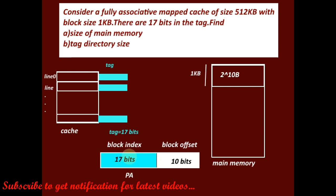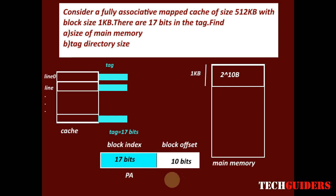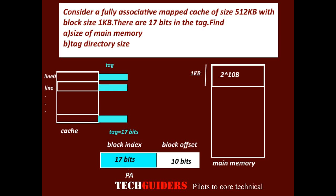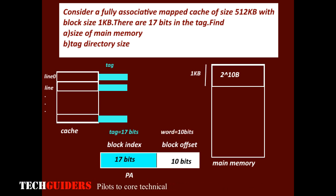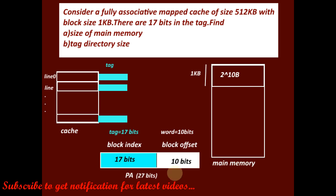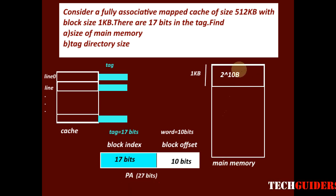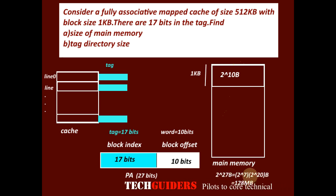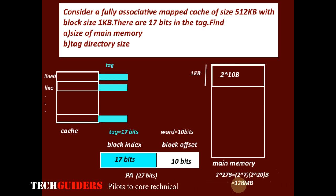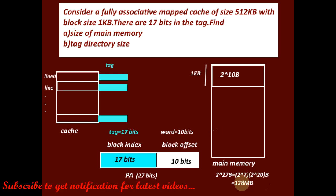Since the block index is 17 bits and the block offset is 10 bits, the total number of bits required for the physical address is 27 bits. This means there are 2^27 bytes within the main memory, which equals 2^20 × 2^7 bytes, or 128 megabytes. The total size of the main memory is 128 megabytes.